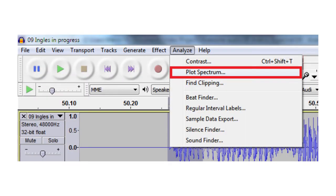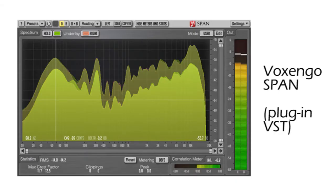In Audacity, you may find it under Analyze, Plot Spectrum, and for VST-compatible software, you can add a plugin such as the Voxengo Span.